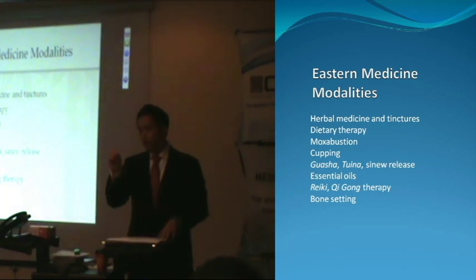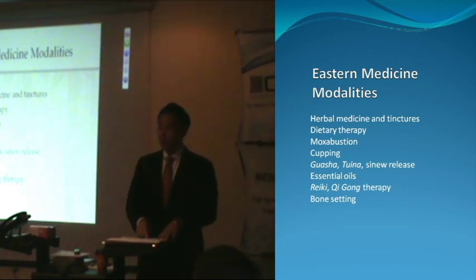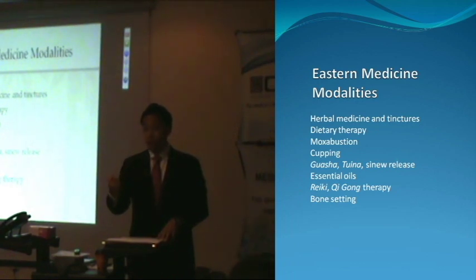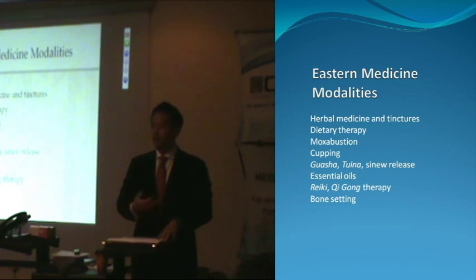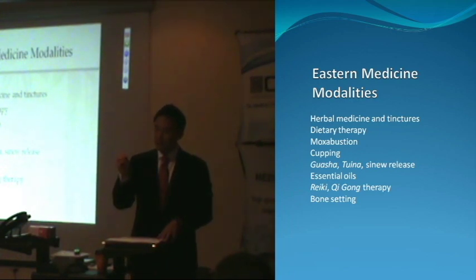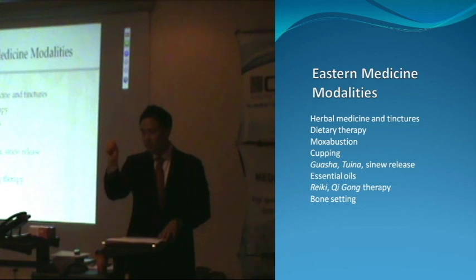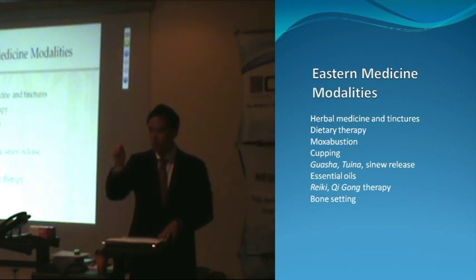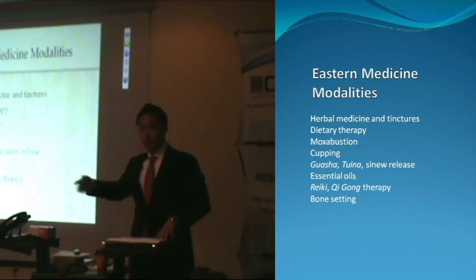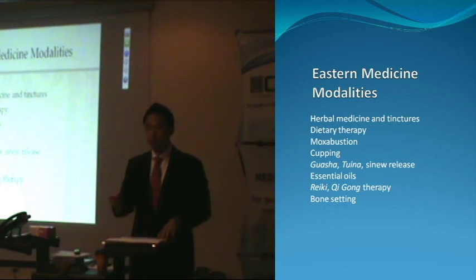Another modality is the burning herb — moxibustion — applying heat to acupuncture points. Sometimes your body needs more energy. For example, if your digestive system is having diarrhea or prolapse, applying heat to a specific point, or even placing the needle and burning herbs on top of it, sends heat into that point, which strengthens the organ and allows your body to heal. You can get rid of the diarrhea, usually in one treatment right away.